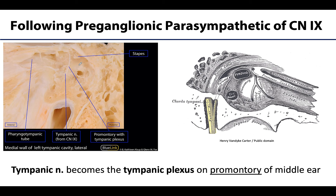At this point, instead of being one distinct nerve, the fibers begin to spread out to form a portion of the tympanic plexus, which can be seen on the promontory of the middle ear. The promontory is created by the basal part of the cochlea, forming a bump, and you'll see small nerve fibers sitting right on top of the promontory.